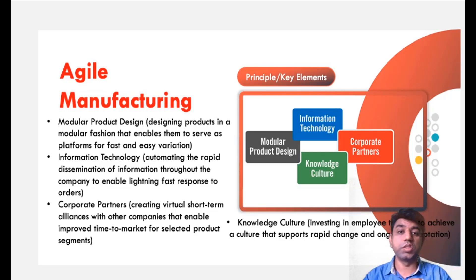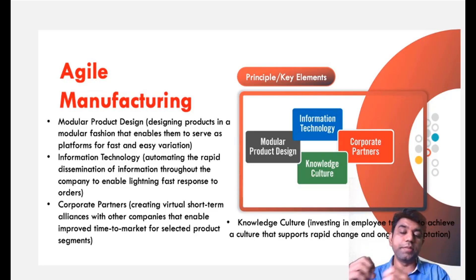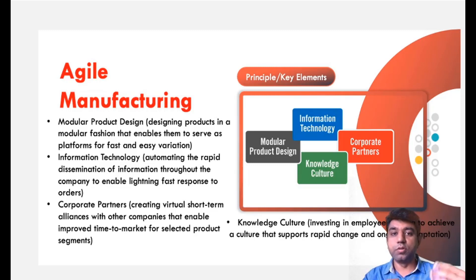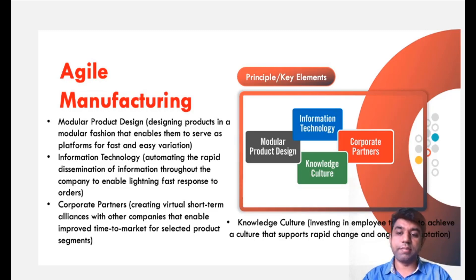The second thing we need to use is information technology. That is why the IT field is booming nowadays, because according to the information coming from the customer, we need to have particular technology through which we can easily make changes in our system. Basically, we need to have quick programming so that the process is flexible and in line with the need of the customer. The use of information technology must be there if you need to go for agile manufacturing. The third thing we must have is corporate partners — there should be an alliance between different industries, because a single industry cannot serve multiple purposes.